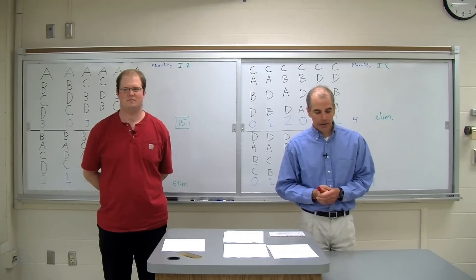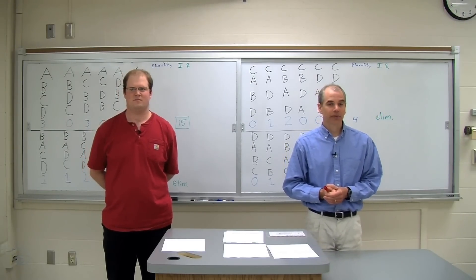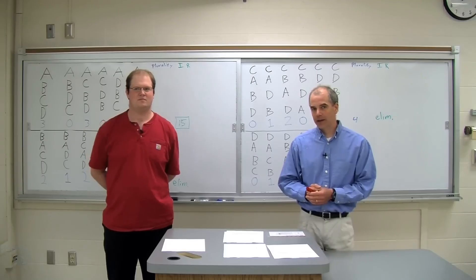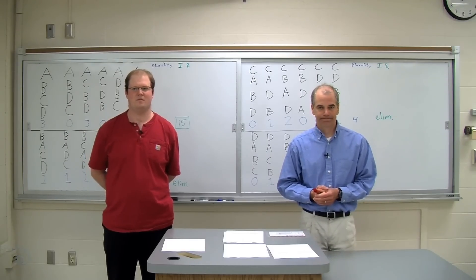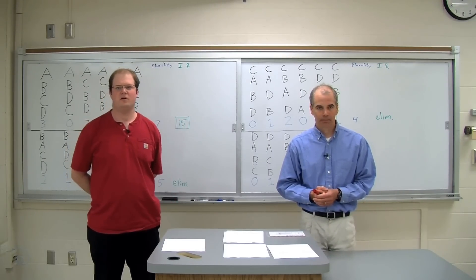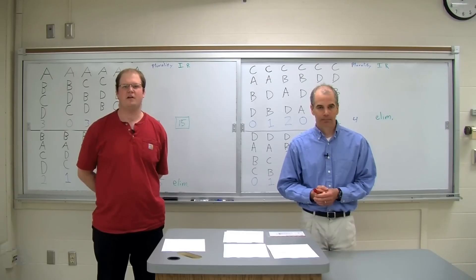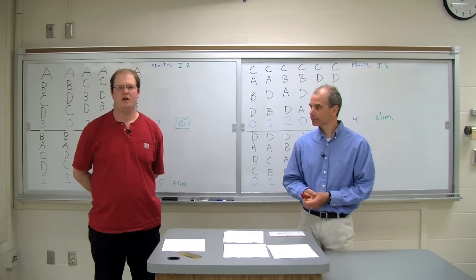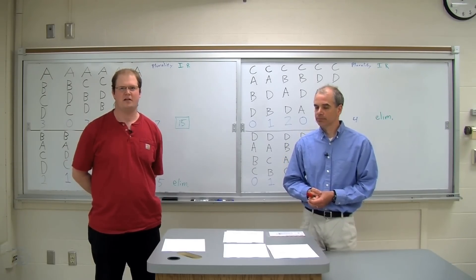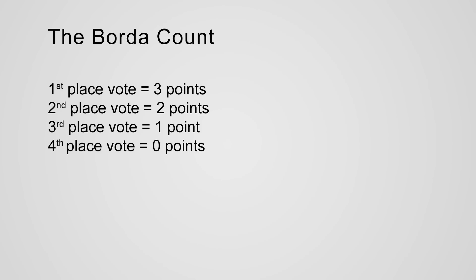Next we're going to talk about a method you may not have heard of before, and that method is the Borda count. The way the Borda count method works is that for each place that you rank somebody, points are awarded to that candidate. In our example with four candidates, a first place vote is worth three points, second place two points, third place one point, and last place no points. At the end, you tally up all the points, and the person with the most points is the winner.